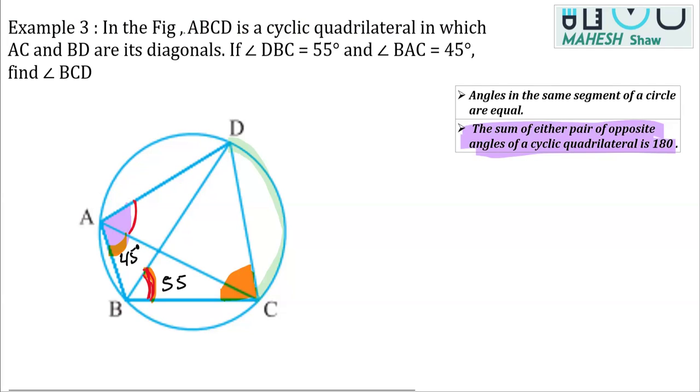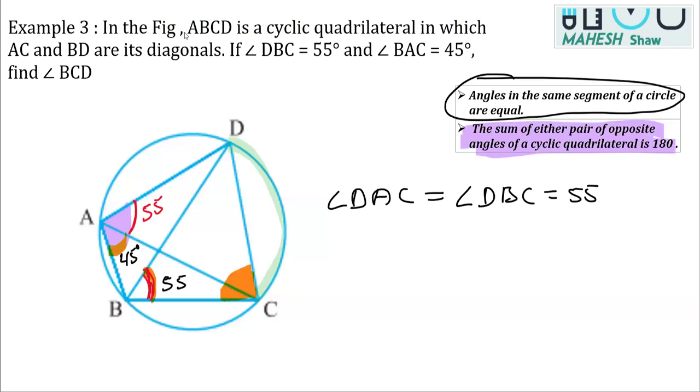So we can write this angle as same as 55 degrees, right? So let's write down the working here. We can write the reason for this. We'll write angle DAC is equal to angle DBC and that is equal to 55 degrees and the reason is angles in the same segment are equal. We must write down the reason here that is angles on the same segment are equal.